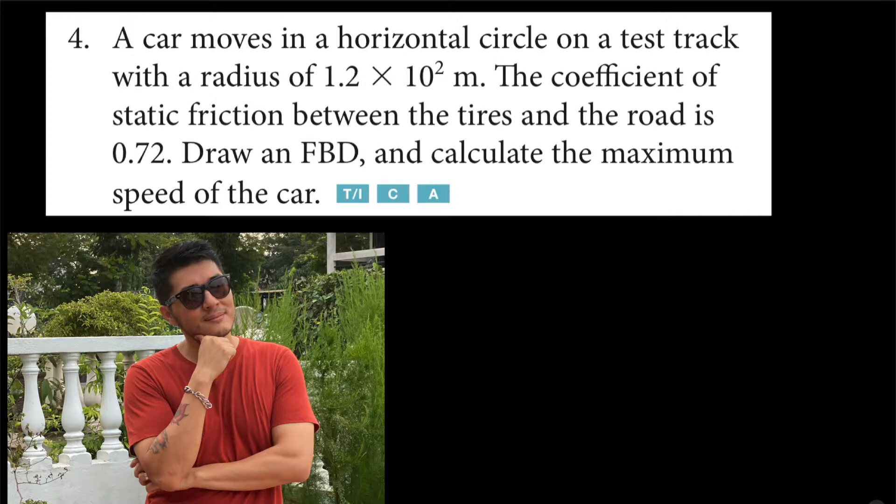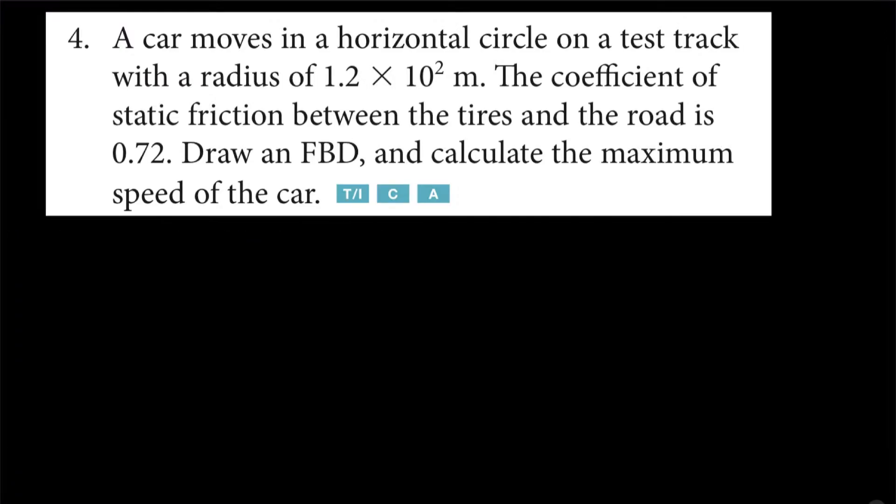A car moves in a horizontal circle on a test track with a radius of 120 meters. The coefficient of static friction between the tires and the road is 0.72. Draw a free body diagram and calculate the maximum speed of the car.